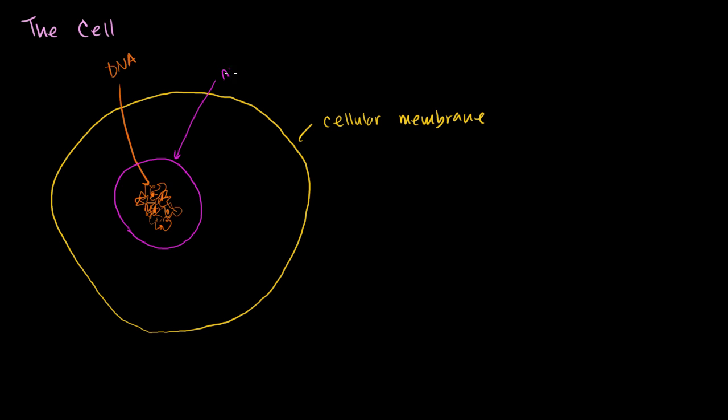And this is called a nucleus. And I said that's a major division, because when some people looked at some cells and they saw a nucleus in other cells and they didn't see a nucleus, they said, hey, this is a good way to classify organisms. So they called things that had nucleuses eukaryotes. These have a nucleus. So as I've drawn this cell right here, it is a eukaryote.